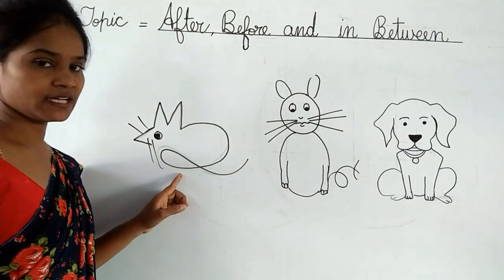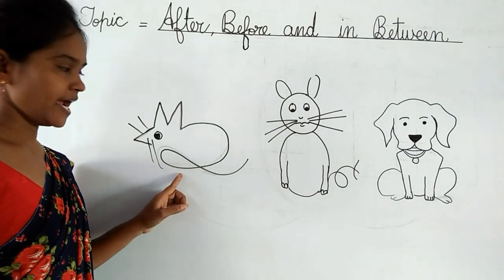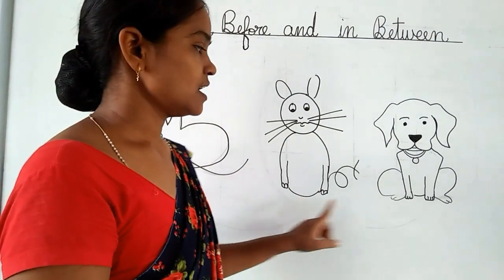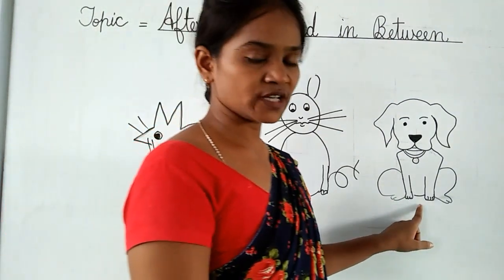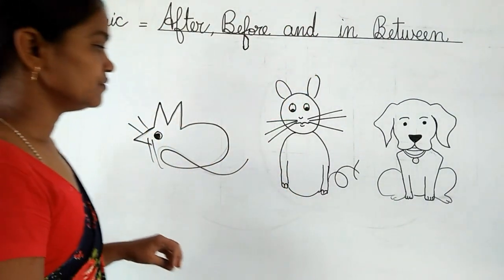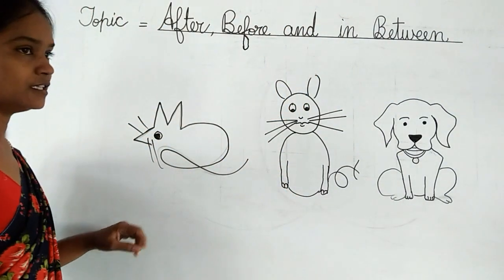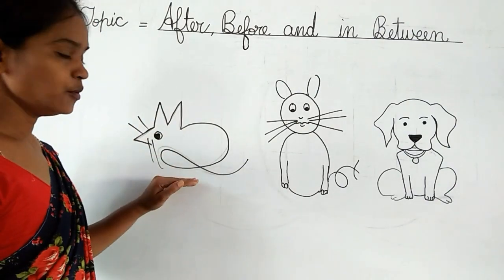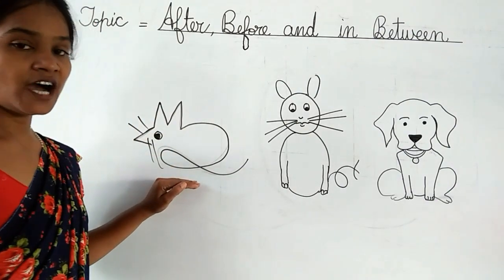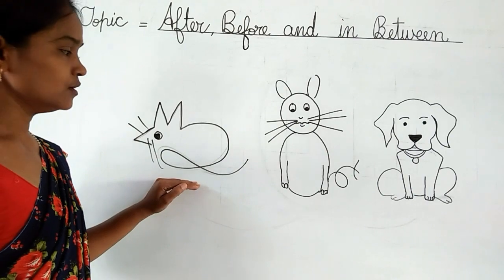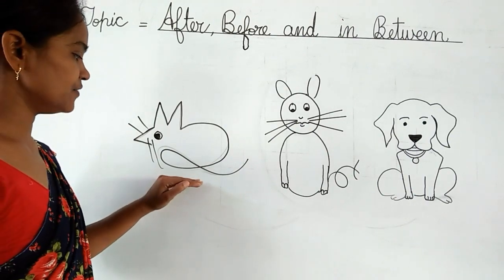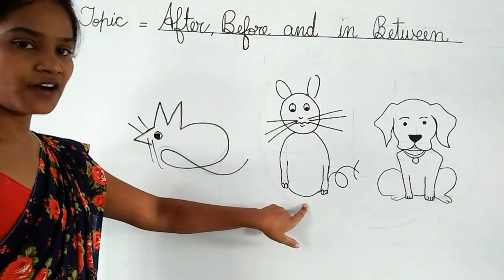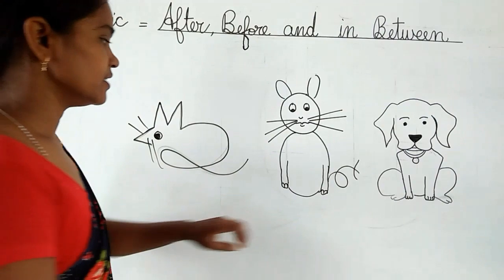First picture is rat, second picture is cat and third picture is dog. First we will learn about after. Who is after the rat? Cat is after the rat.